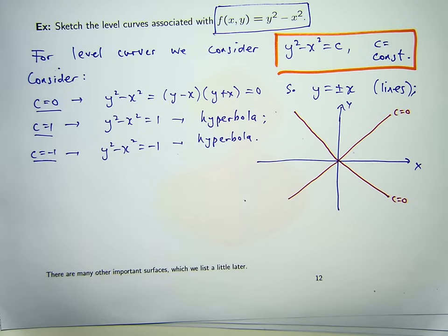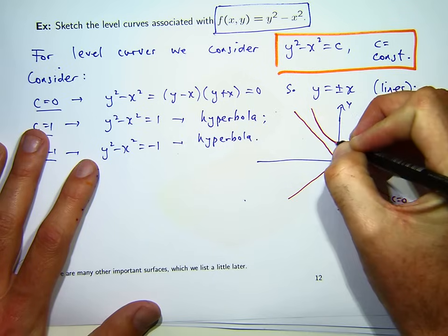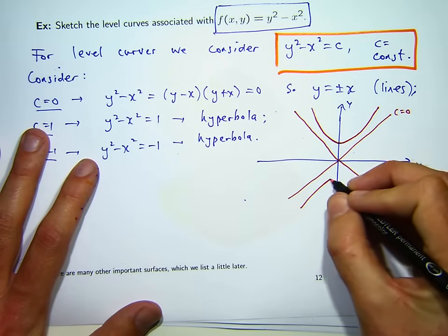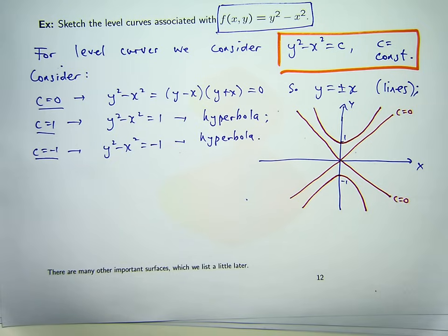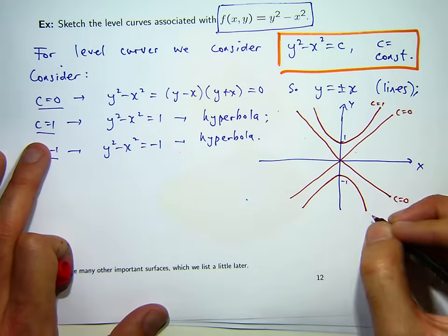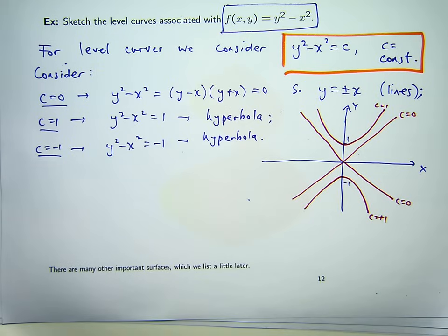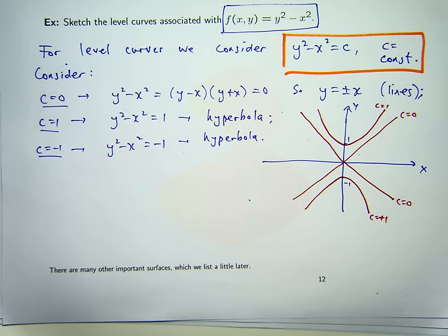What about the case C equals 1? Well, I get a hyperbola. So, from this I can sketch in this curve here which goes through 1 on the y axis and this curve here that goes through minus 1 on the y axis. Ah, sorry, C equals 1, positive 1 and positive 1. So what does that tell us? Well, these two curves are the curves of intersection between the horizontal plane, Z equals 1 and the surface.